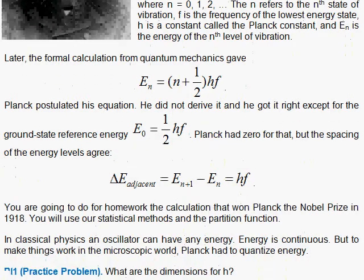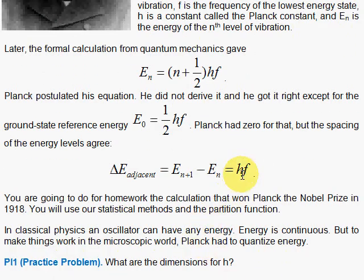Notice that the Planck constant here has units of energy times time because the frequency is one over time and energy has to be then just joules. So, if you have, say, this is one over seconds, you have to have joules times seconds so the one over seconds will cancel and you'll get joules.